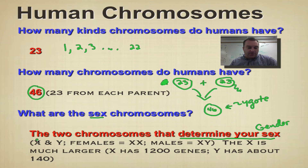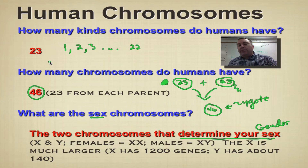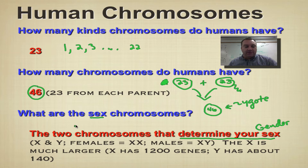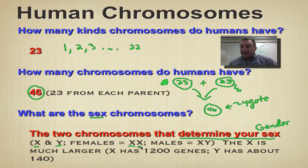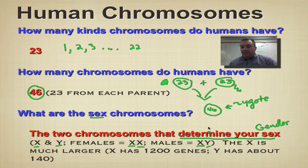These sex chromosomes have fancy names. The first 22 chromosomes are named by a number, but the sex chromosomes get letters. They come in two flavors: X and Y. Girls have two X's — they got an X from mom and an X from dad. Males, on the other hand, are X and Y — they got an X from mom, but their dad gave them a Y.